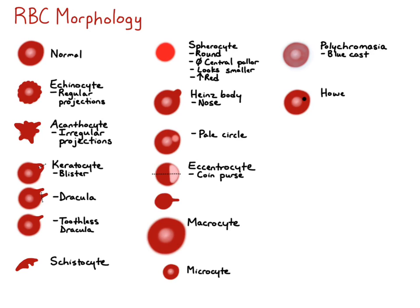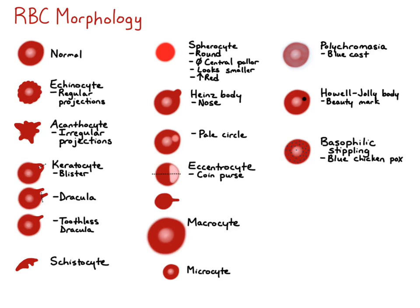A Howell-Jolly body is a nuclear remnant within the red blood cell. It looks like a very deeply basophilic, almost black circle within the red blood cell — you can think of it like the red cell has a beauty mark on it. Basophilic stippling is when there are many pinpoint blue dots diffused throughout the cytoplasm of the red blood cell — it kind of looks like the red cell has blue chicken pox.